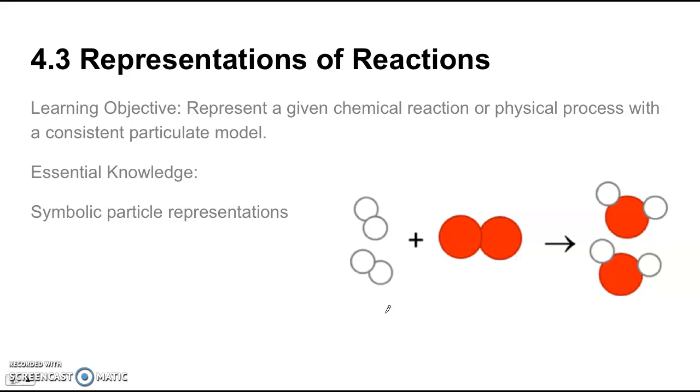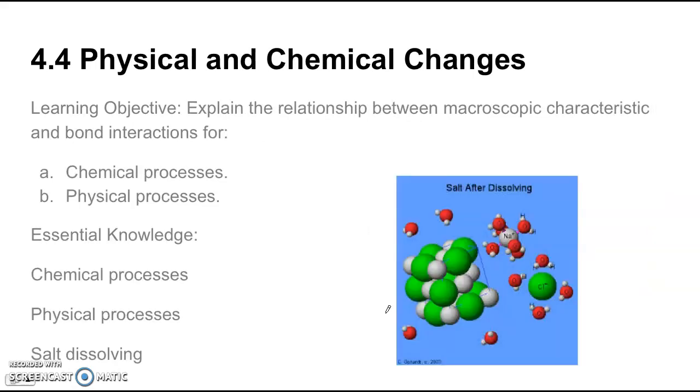And then 4.4 is on physical and chemical changes. The learning objective is explain the relationship between macroscopic characteristics and bond interactions for chemical processes and physical processes. So the essential knowledge here, in a chemical process you want to know that in any chemical process you're either breaking or forming intramolecular bonds, as in ionic or covalent bonds, bonds within molecules. In a physical process, that is when we're breaking or forming intermolecular forces, you know, hydrogen bonds, dipole-dipole in a physical one, and dispersion forces. So that's kind of the key information there. Chemical bonds, it's intramolecular. Physical process, that's intermolecular.